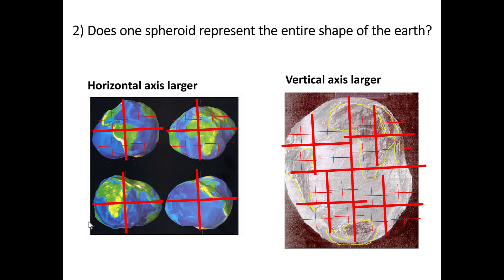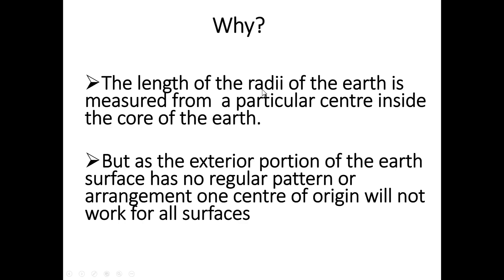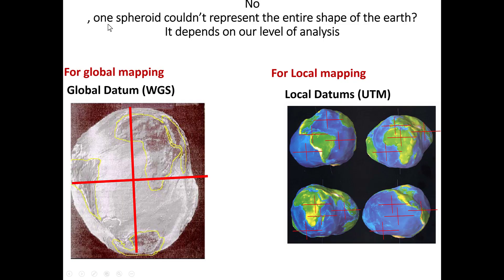Does one spheroid represent the entire shape of the Earth? The length of the radii of the Earth measured from particular centers varies. As an exterior portion of the Earth's surface has no regular pattern or arrangement, one center of origin will not work for all surfaces. One spheroid could not represent the entire Earth. It depends on our level of analysis.